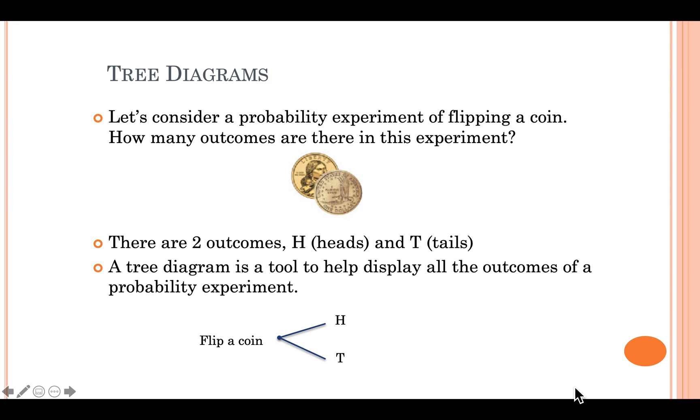If there happen to be three outcomes to an experiment, you're going to have three branches. But in this case, there's just two, so heads and tails. And then after the two outcomes are written on the tree, you're going to create a list of outcomes to the right of the tree. This is an extremely simple experiment, just flipping a coin once, so there are only two outcomes: heads and tails. We can make this a little bit more complicated.